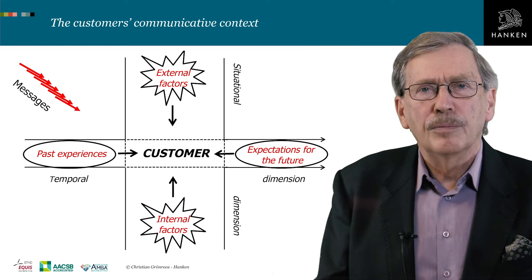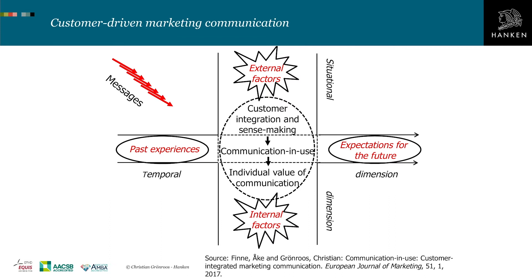Adding the customer's decision-making process to his or her communicative context, the model looks like this. Influenced by the two types of temporal effects and the two types of external effects, the customer will start to, in his or her mind, integrate all the various types of messages from various sources. Trying to make sense of them, the outcome is a picture of what is useful — that is, communication in use — and this is used for decision making, where the customer's individual value of all communication coming in is used for making the decision.